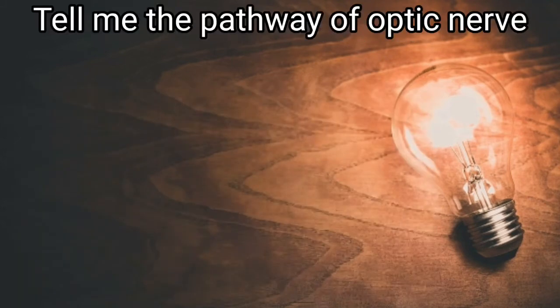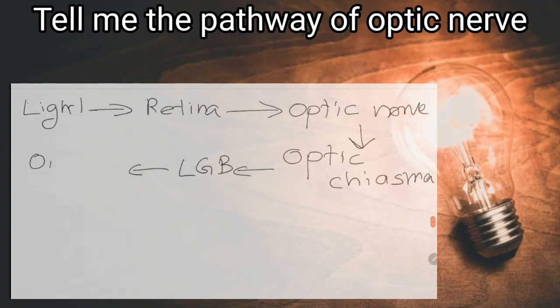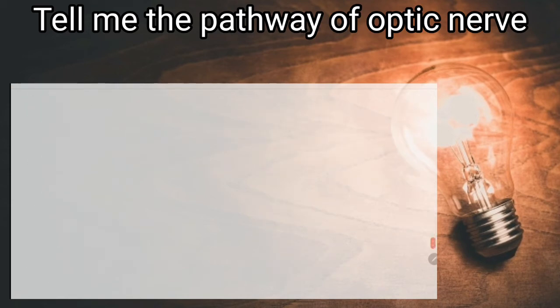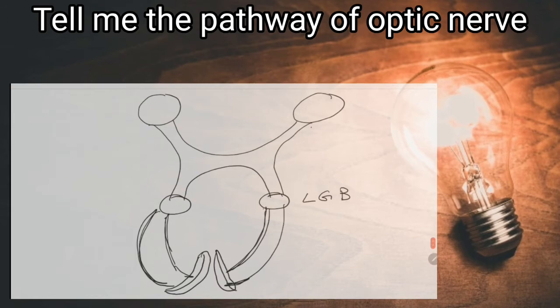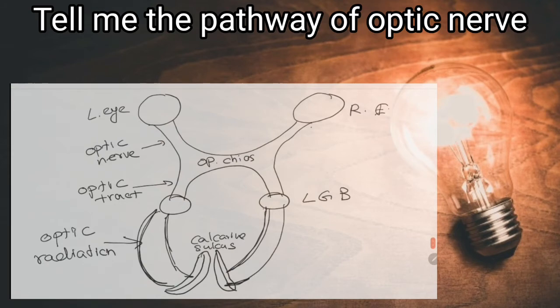Tell me the pathway of the optic nerve. Axons of ganglionic cells of retina form the optic nerve. Optic nerve leaves the retina at the optic disc and enters the optic canal. Fibers from the nasal part of the retina cross at the optic chiasma. Then the fibers pass through the optic tract. Majority of the fibers in the optic tract pass to the lateral geniculate body of the thalamus and to the visual cortex. Small number of fibers pass through the pretectal nucleus of midbrain.